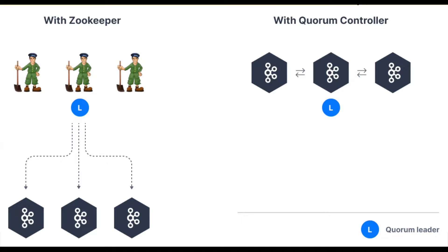For this demonstration I am going to set up Kafka in KRaft mode on a Kubernetes cluster, and for the demonstration I will be running Kubernetes in my local machine. For that I am going to use a utility called kind, which allows me to run a Kubernetes cluster using Docker containers.